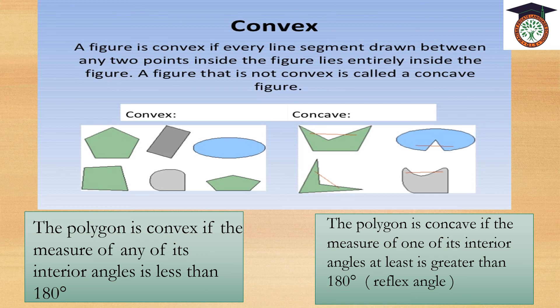So, the convex polygon has all its angles less than 180 degrees. And the concave polygon has at least one of its interior angles greater than 180 degrees.